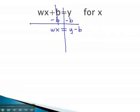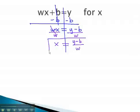Now, to get the x alone, we simply have to do the opposite operation. It's x times w, so we will divide by the variable we want to get rid of on both sides. The x is now alone, and our final answer is the expression y minus b over w. And this becomes our solution.